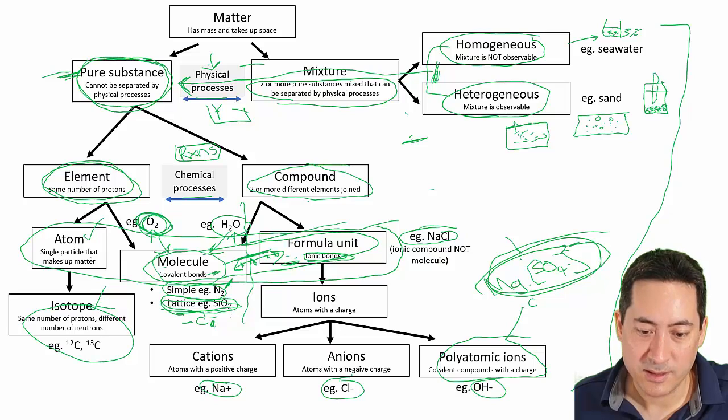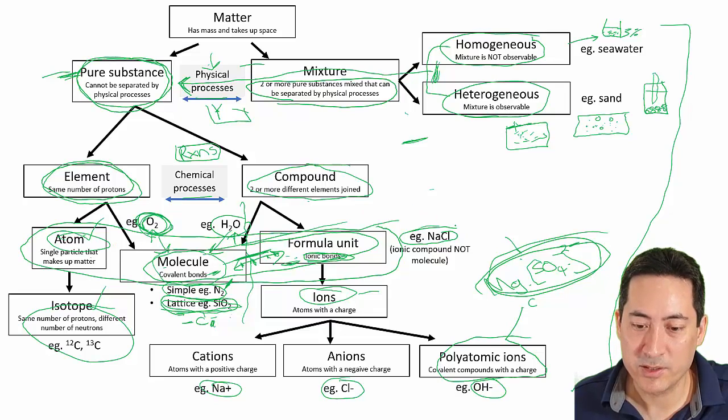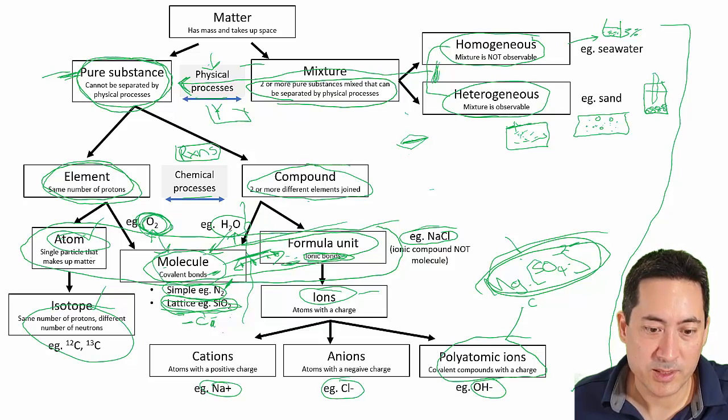Because if you use an incorrect term, such as ions and atoms getting mixed up, you may get the question wrong because ions do a particular thing that atoms do not do because they have a charge. And so I've seen those sort of errors in the exams. And you're also expected to be able to communicate well. So you need to know all these terms and how they apply to different chemicals.